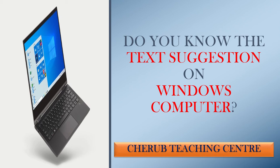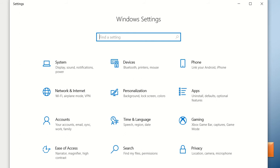Let's start. Today I am going to show you on your Windows 10 computer where you can turn on the text suggestion, which is going to make your typing a lot easier. For that, you need to go to the Windows Settings.